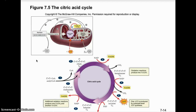What determines the fate of pyruvate following glycolysis is whether oxygen gas is available or not. In aerobic respiration, oxygen gas is available because oxygen will be the final electron acceptor. When oxygen takes on those electrons, it takes on hydrogen and forms a water molecule. So pyruvate in the presence of oxygen will go through the preparatory step and then into the citric acid cycle. The main job of the citric acid cycle is to produce those electron carrier molecules NADH and FADH2.